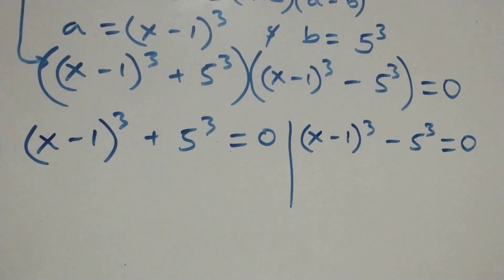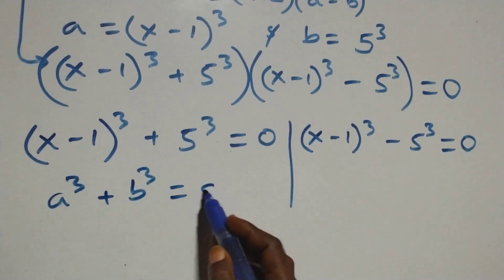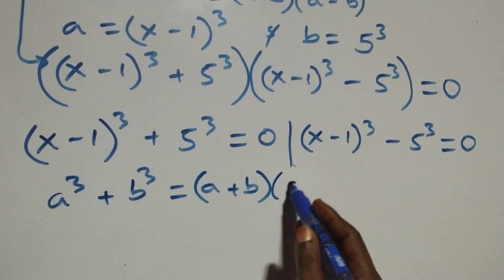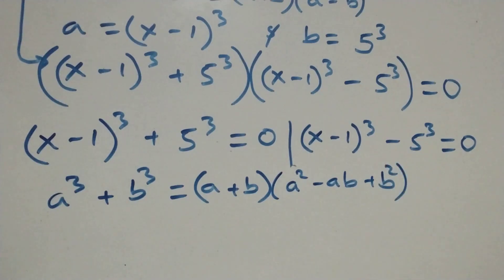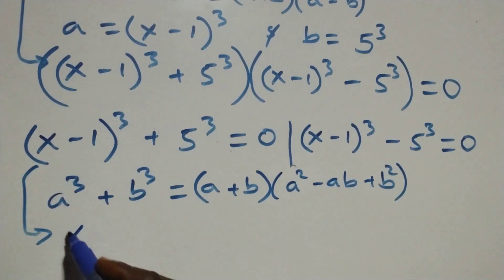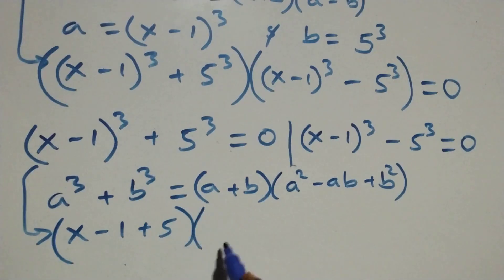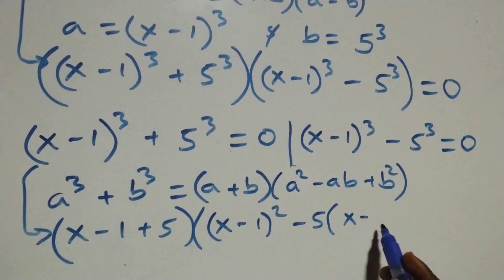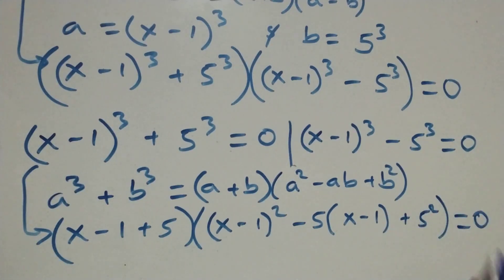Solving the first case, this follows from a³ + b³ = (a+b)(a² − ab + b²). So all we have becomes (x−1+5) times [(x−1)² − 5(x−1) + 5²] equals to 0.